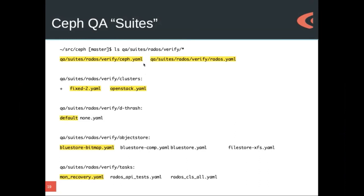When you run Teuthology suite against a folder structure, it will always include the Ceph and Rados YAML files. Then it says, okay, we have this D-thrash folder and two YAMLs inside of it — we're going to run with the default one first. We have this object store folder and grab the BlueStore bitmap YAML. And in this task we're on MonRecovery. That's one job. Then there's a whole bunch of other files, so we'll walk through and run the same configuration but against the Rados API tests fragment, and the Rados classall fragment, and then move on to a new object store configuration and schedule MonRecovery against it, and so on.